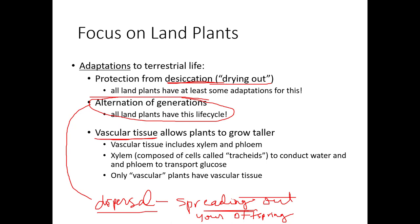All land plants have the alternation of generations life cycle. All organisms that live on land — plants in this chapter — have some adaptations that help with desiccation. All of the land plants have the alternation of generations life cycle, and most of the plants have vascular tissue. The plants that have vascular tissue are called vascular plants, and that will be a clade.